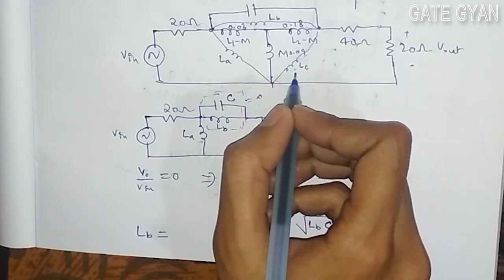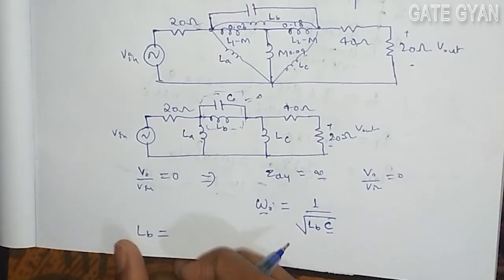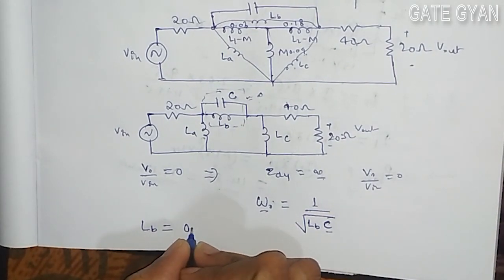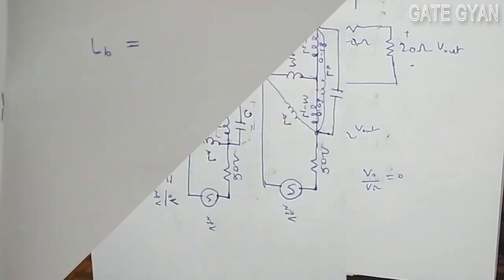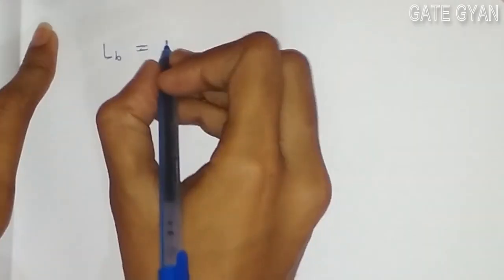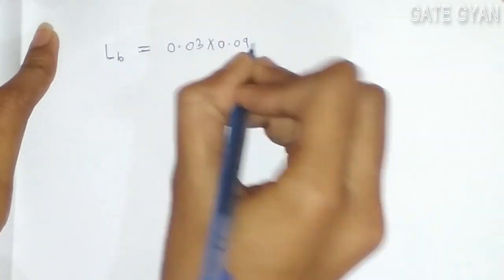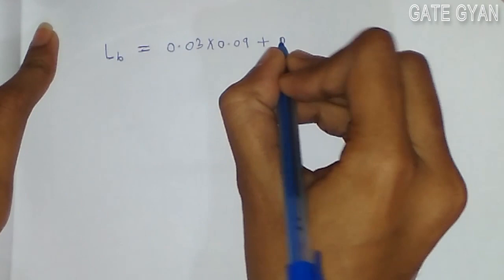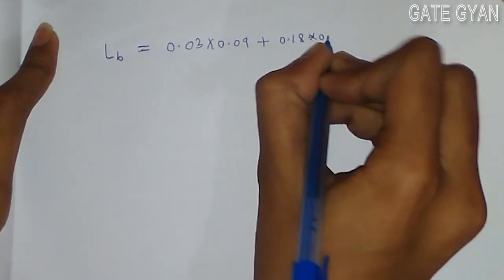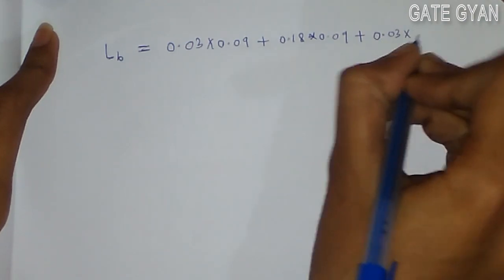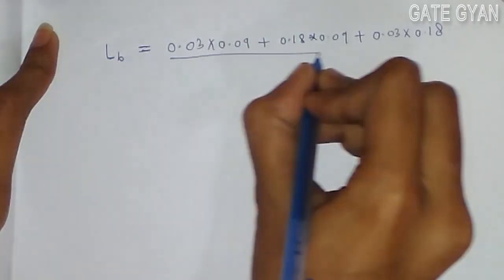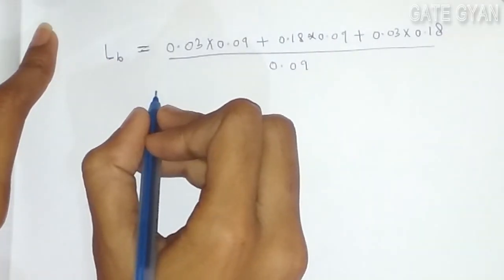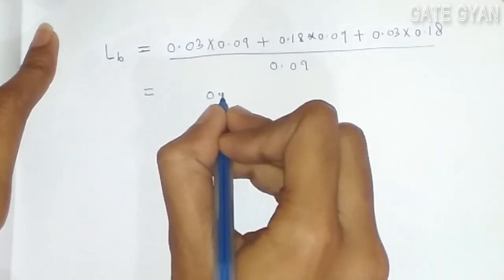This value is going to be 0.18 and M is 0.09. So to get the LB, the star to delta conversion. So here we will get expression of LB. And since we are converting from star to delta, so by formula of conversion of star to delta, we will get our LB as 0.03 into 0.09 plus 0.09 into 0.18 plus 0.18 into 0.03 divided by 0.09. So we will get our LB as 0.27 Henry.